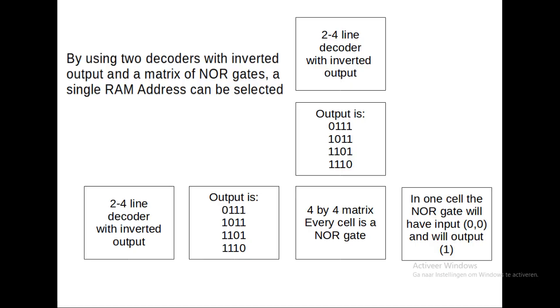I made a slide of it. So you see two 2-to-4 line decoders with inverted output, and the output is 1-0 and 3-1s and they jump from the first place to the second place to the third place to the fourth place. Then you get a 4-by-4 matrix and every cell is a NOR gate. The only cell where 0 and 0 comes together the NOR gate will output A1.